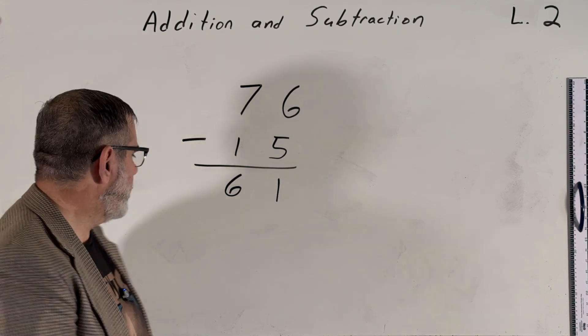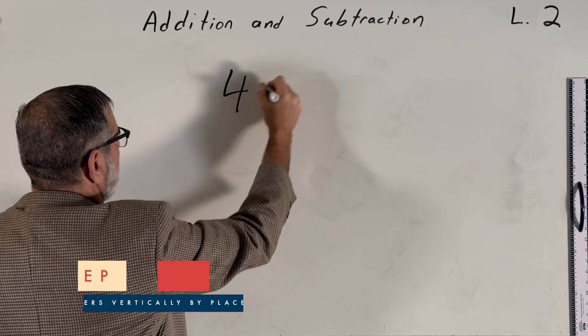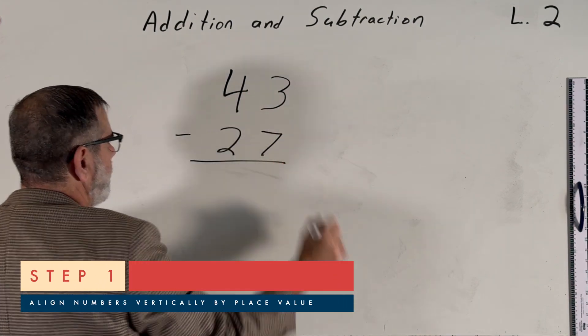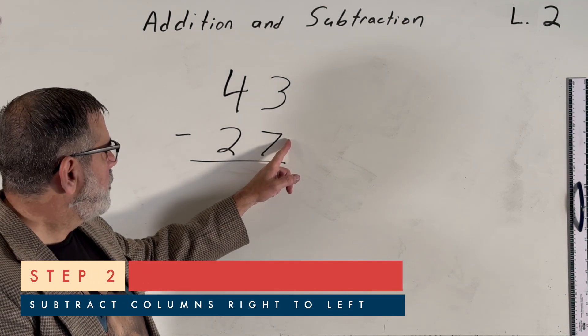Let's try another problem. Let's try 43 minus 27. 43 minus 27. So again, we'll start in the rightmost column. 3 minus 7.